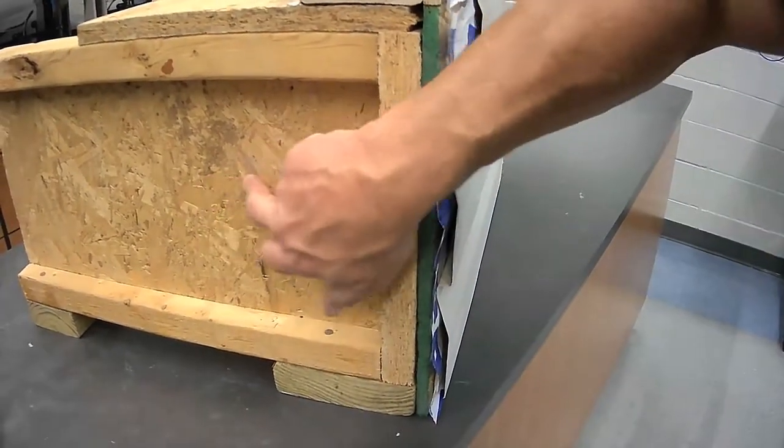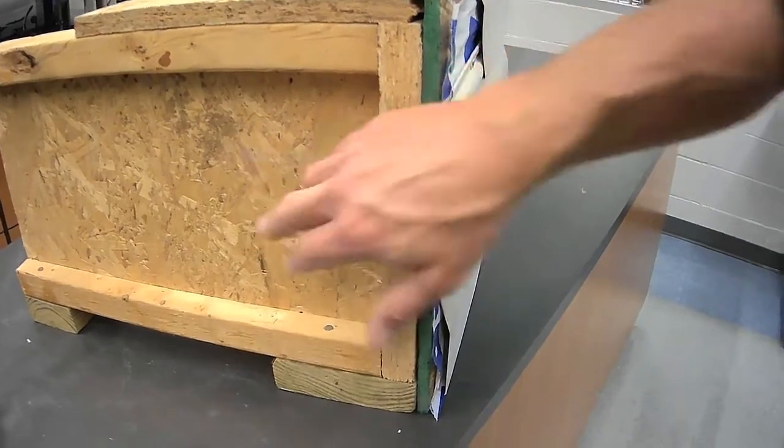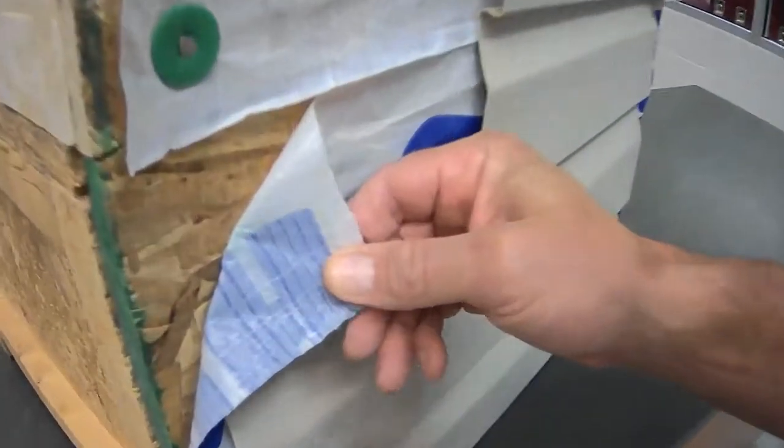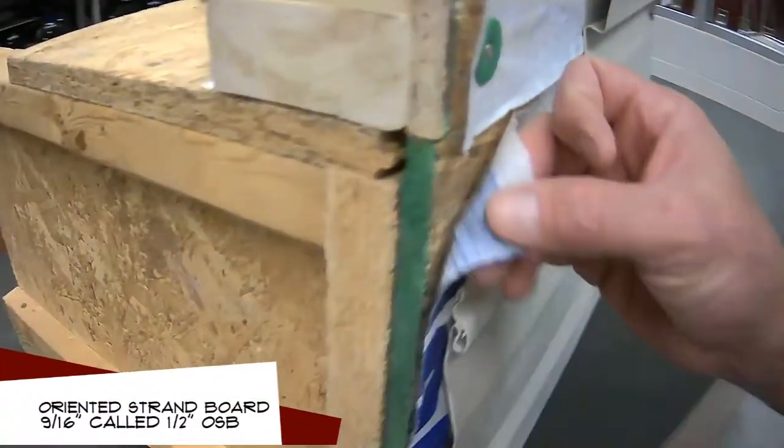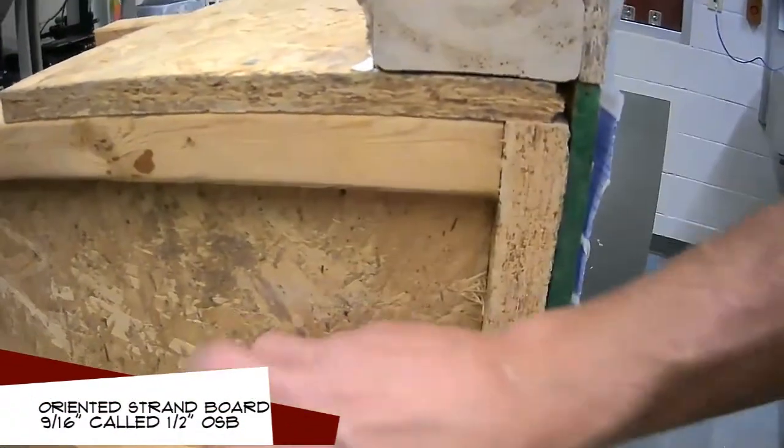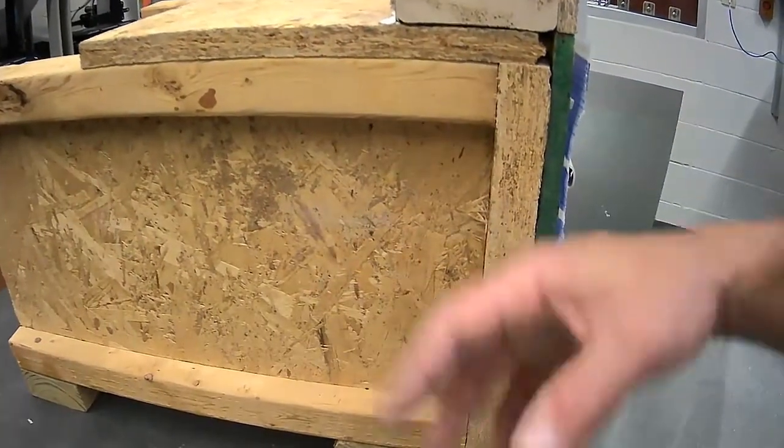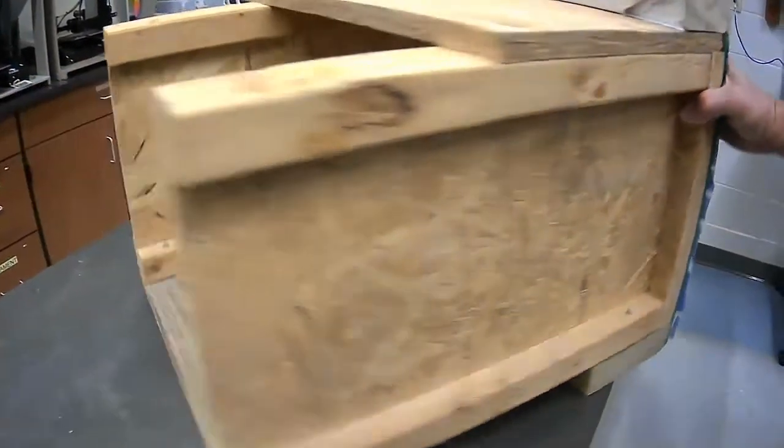You can see inside here this is very similar to what the outside of the house looks like. This is oriented strand board, known as OSB. This is the same type of material, an oriented strand board OSB that has been engineered, designed, and then manufactured.